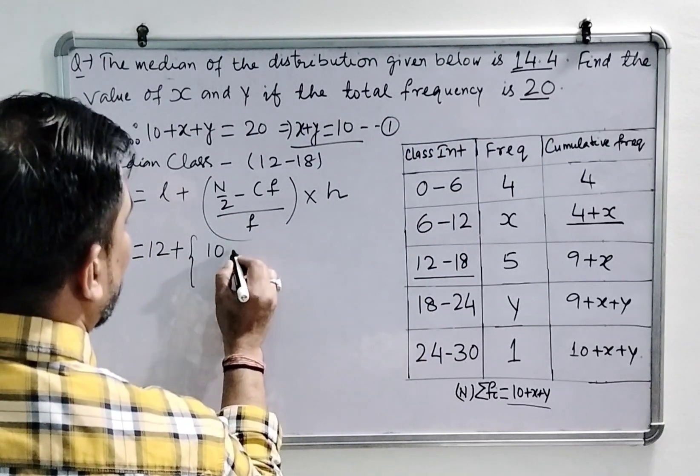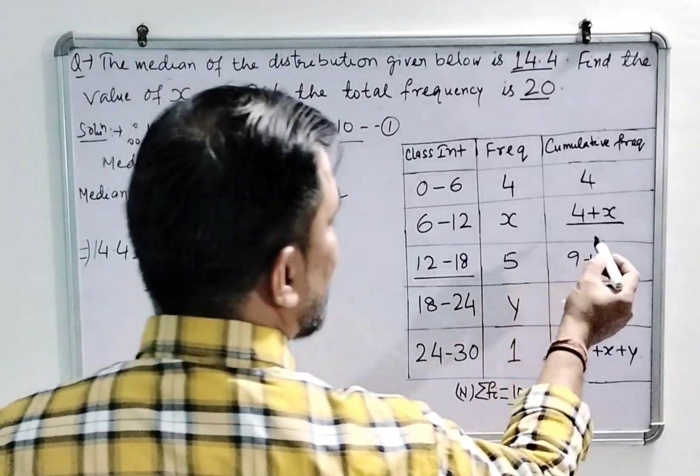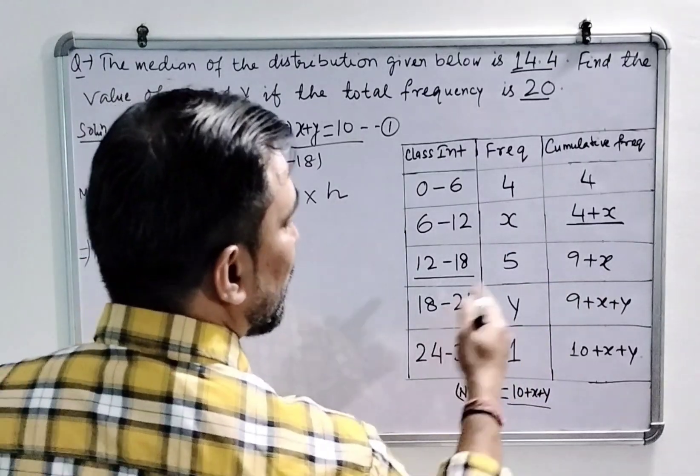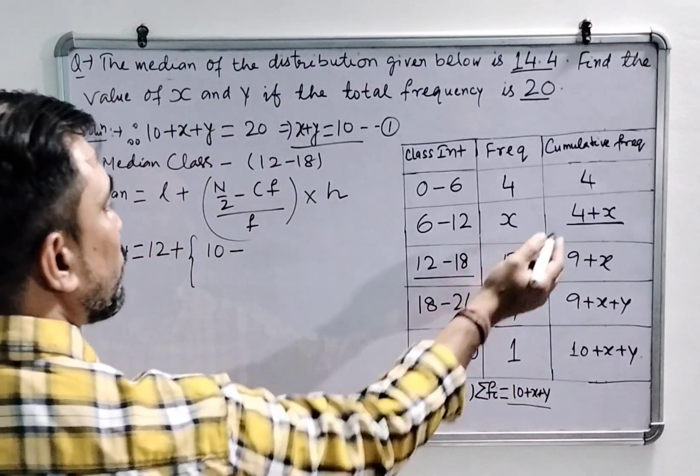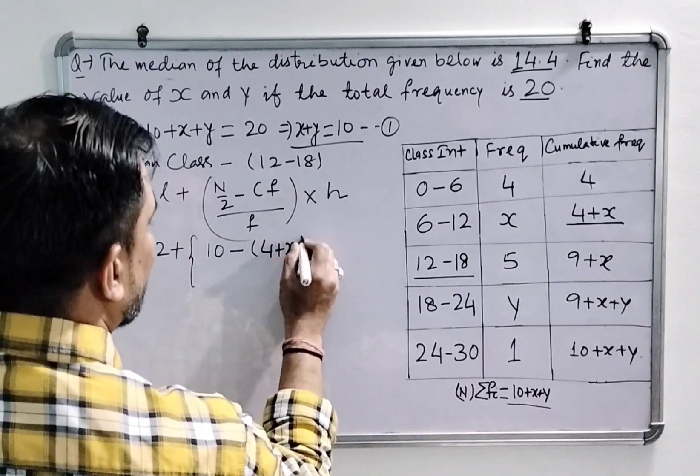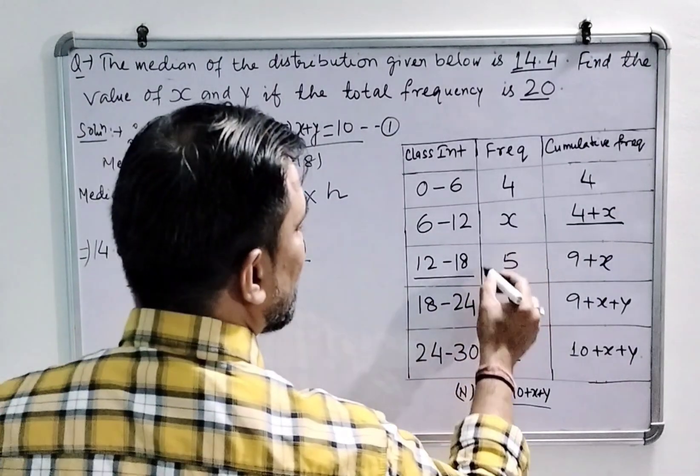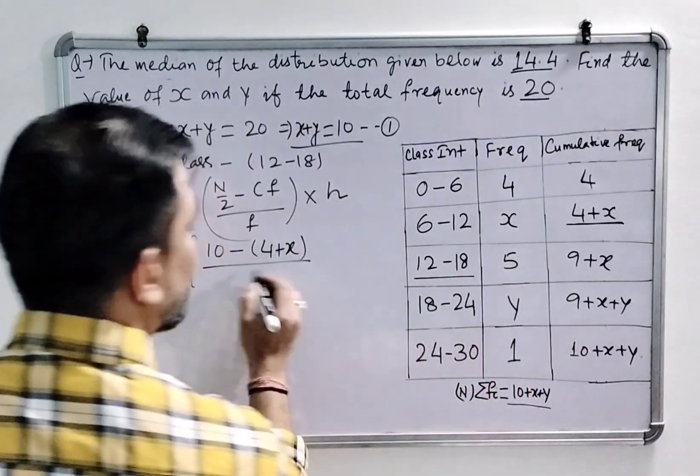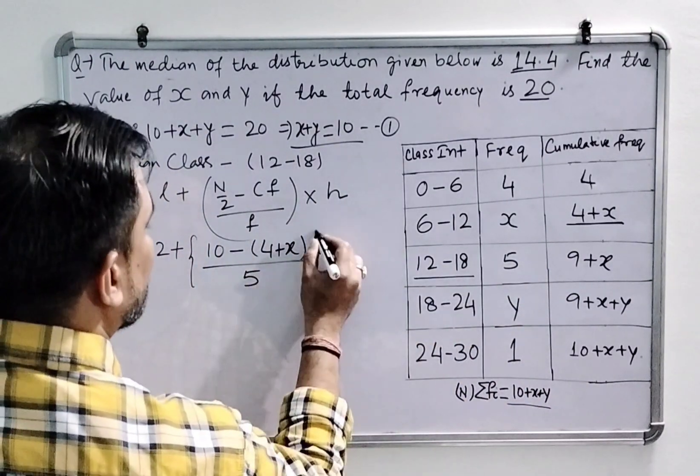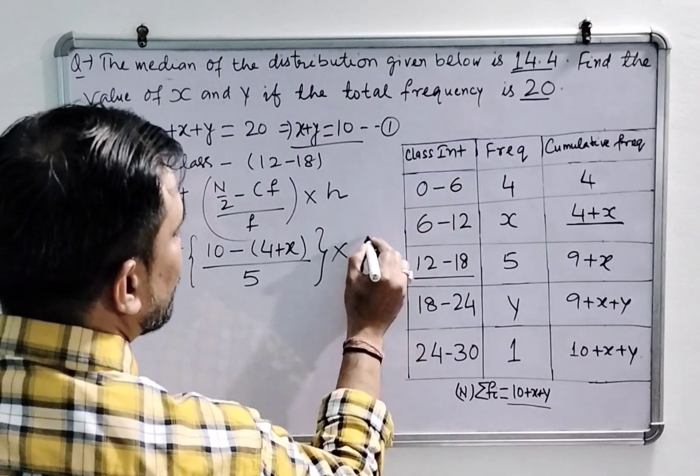Minus the cumulative frequency is that value which is preceding to the cumulative frequency of median class, so that is 4 plus x in this question. Divided by frequency, the median frequency. So here in this table, 5 is the median frequency. h is class width, 6 minus 0 is 6.